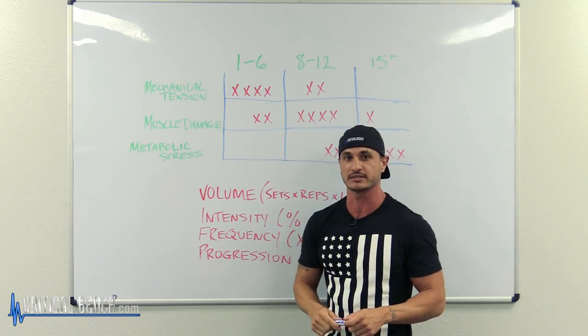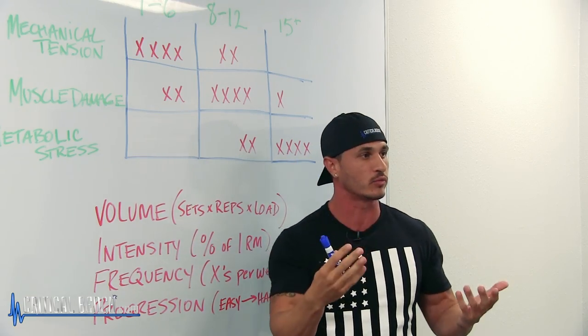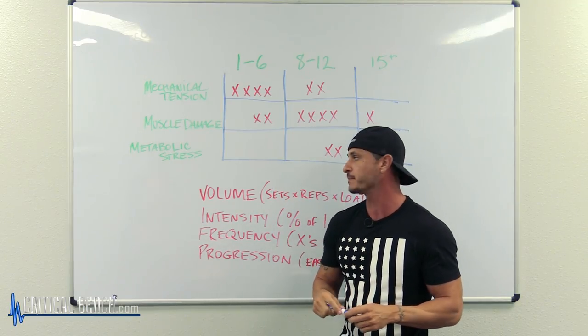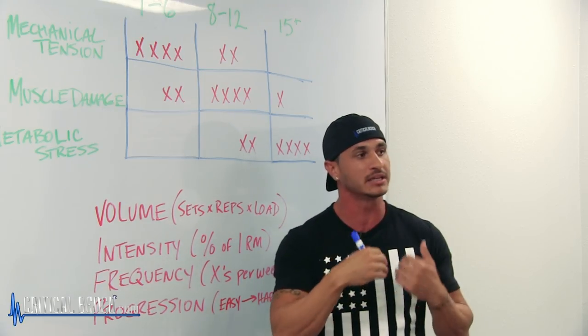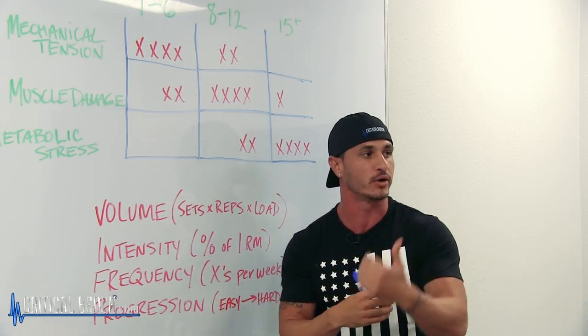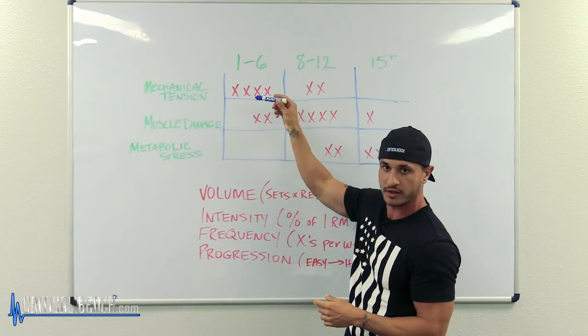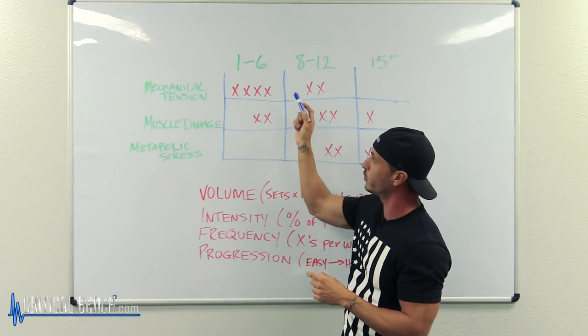When we build muscle, we will also get stronger, because a bigger muscle is a stronger muscle. And then metabolic stress happens when we train in a higher rep range with a lower intensity. What happens here is that we increase the lactate threshold, our ability to fight through that burn.